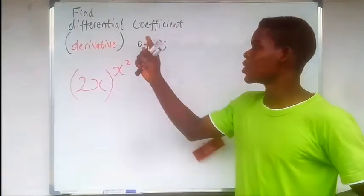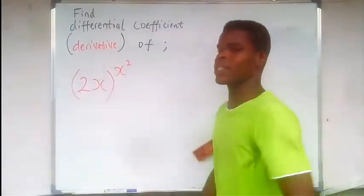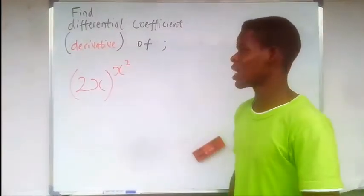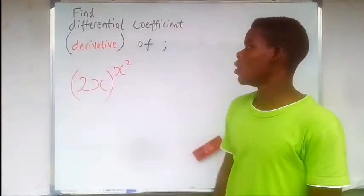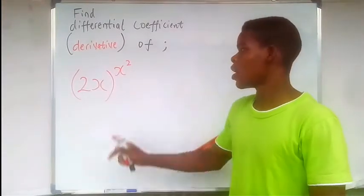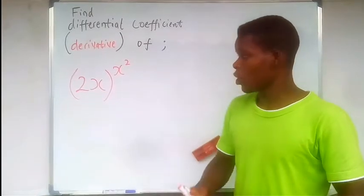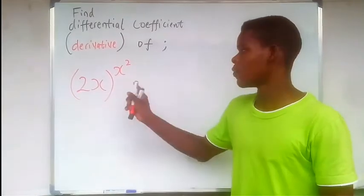Now here we are going to find the derivative of (2x) raised to the power of x squared - the differential coefficient. It's just another name for saying find the derivative. So we're given this function 2x to power x, and x is raised to power 2. We're going to find the derivative of this function here.